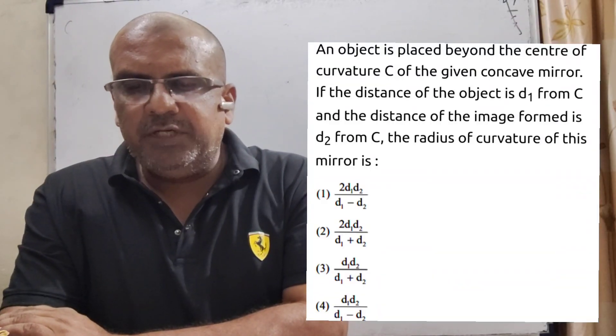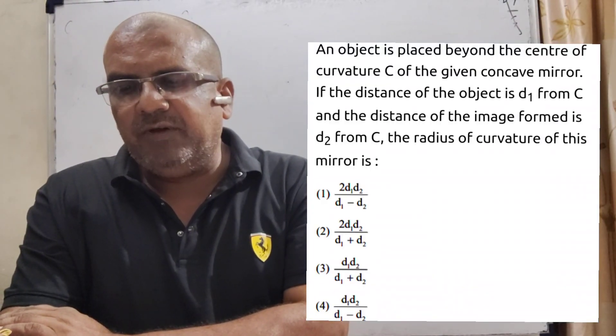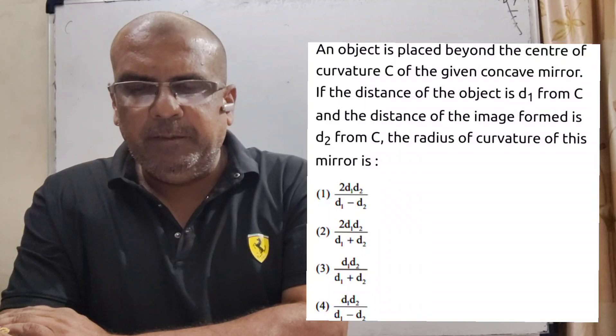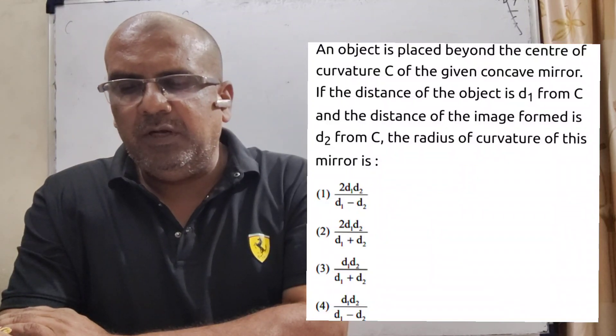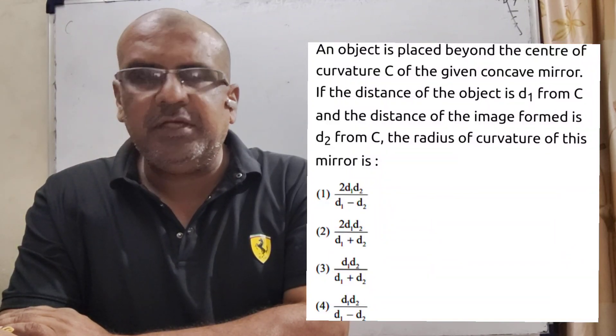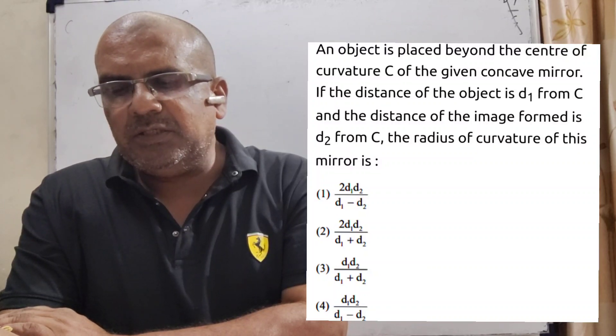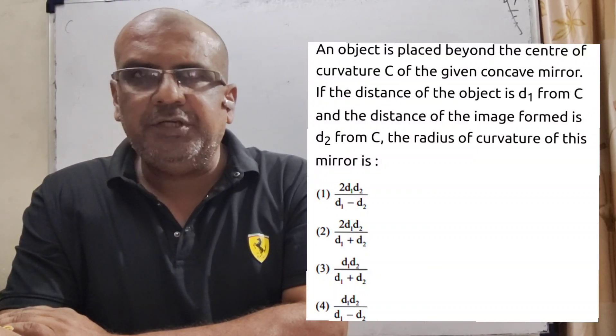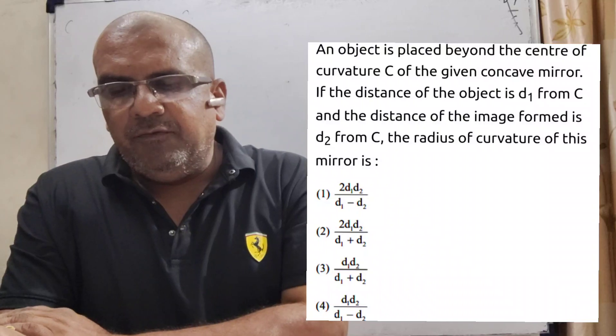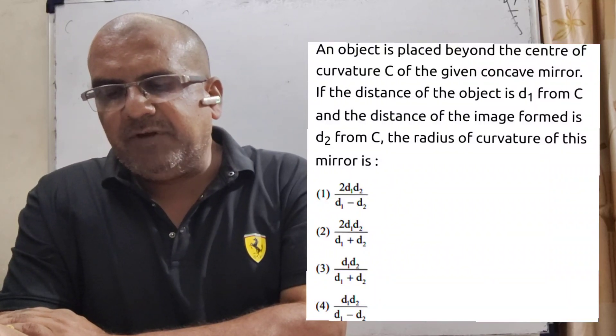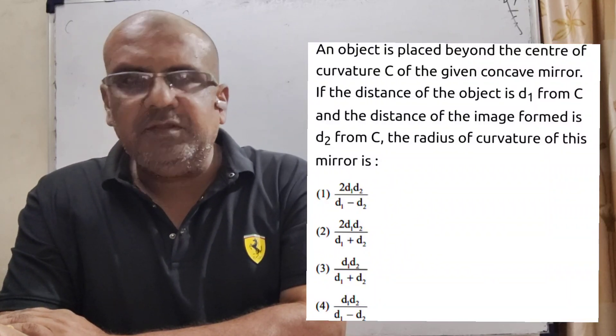Thank you once again. Here is the question. An object is placed beyond the center of curvature, capital C, of the given concave mirror. If the distance of the object is small d1 from C and the distance of the image formed is d2, small d2 from C, the radius of curvature of this mirror is: